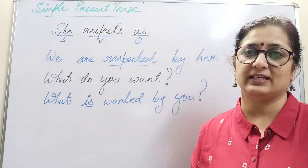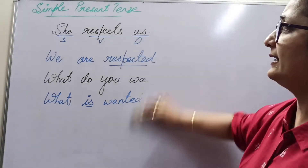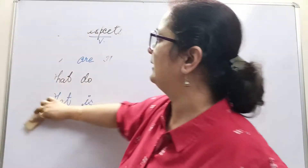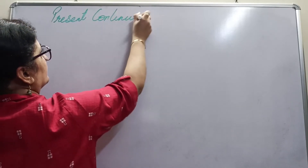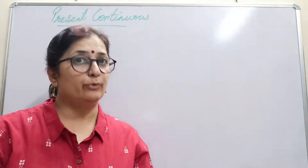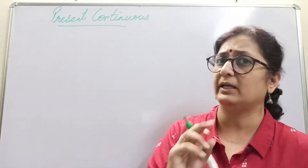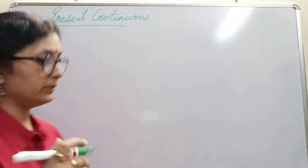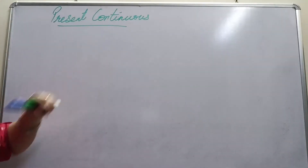Now, how about present continuous tense? For a continuous tense, the basic requirement is that we always have an '-ing' with the verb — whenever we have a continuous tense, we will always have an '-ing.' Let me give you an example with a simple sentence first, then a question sentence. The simple sentence in present continuous form is: 'Tom is building a house.'